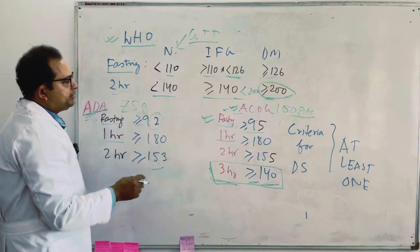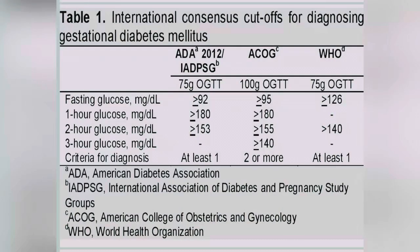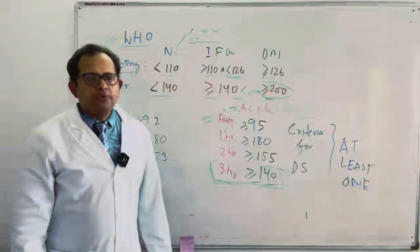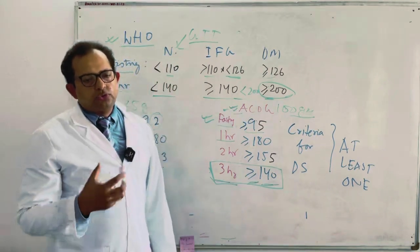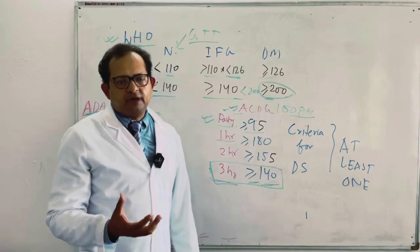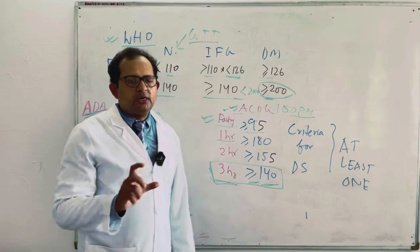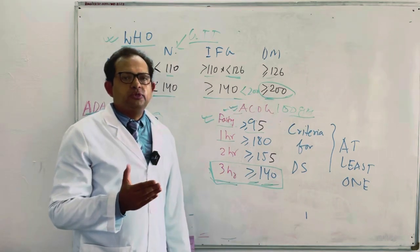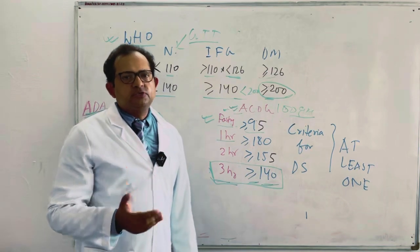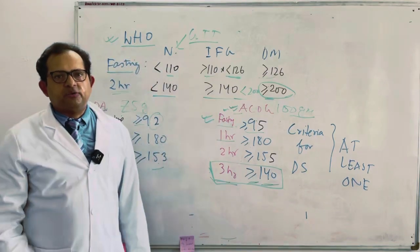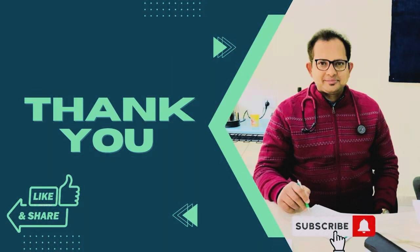So these are the three criteria which we follow while diagnosing the gestational diabetes. I hope you have understood the GTT, and I will also show you the OGTT graph now and I will also give you the table and the chart which is being considered by the WHO and ADA. Thank you very much for your attention. I will see you very soon in the next lecture. Have a good day.